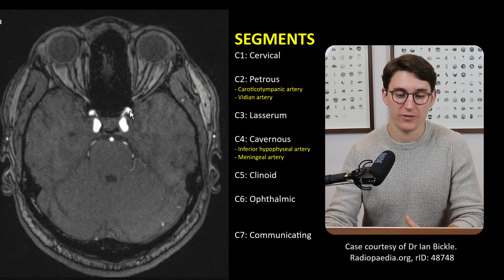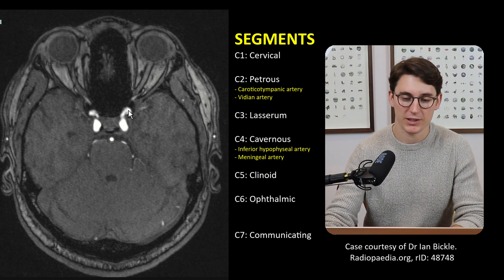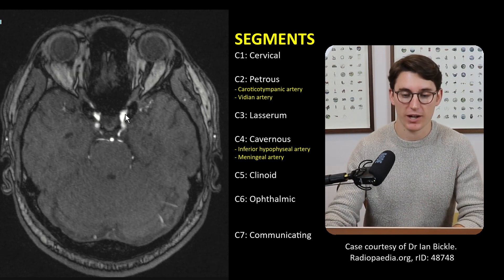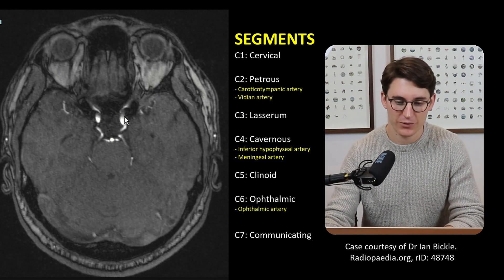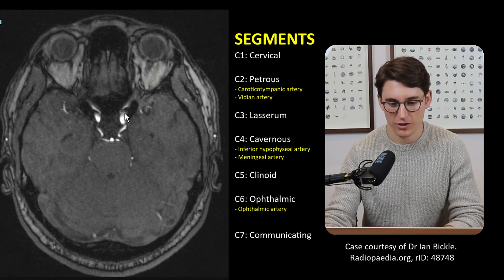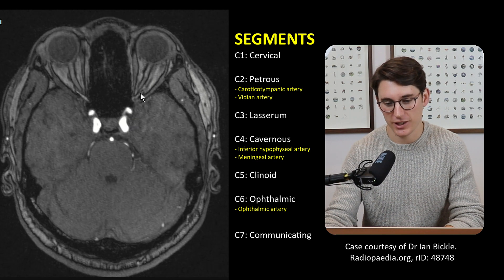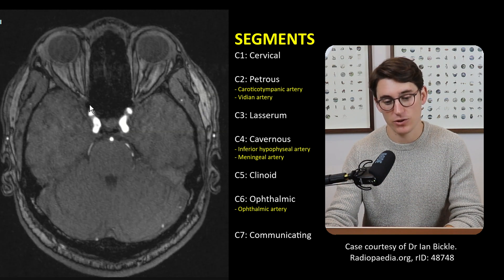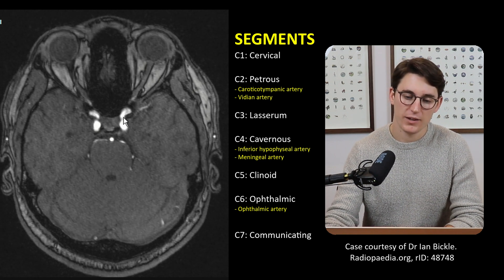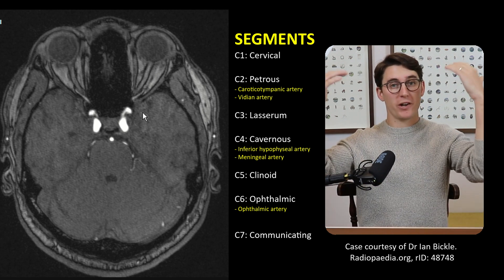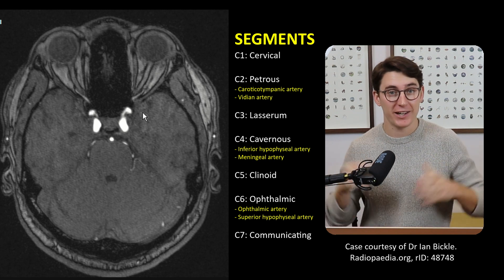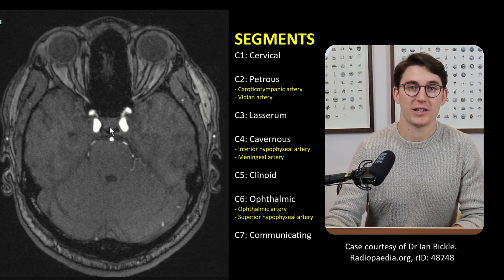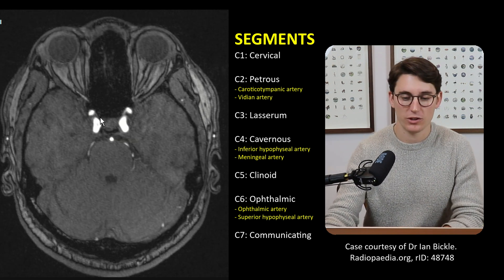Then again we loop our clinoid segment, C5 — there are no branches of the clinoid. And we come around into our ophthalmic segment, C6, which also has two branches. The first is the biggest branch off the ICA — the ophthalmic artery. On the patient's left-hand side we can see the ophthalmic artery coming off, and we can follow it through the optic canal heading into the orbit. The same on the other side — you can see that ophthalmic artery coming off the right, heading through the optic canal into the right orbit. The second branch off C6 — since we are now superior to the pituitary gland — is the superior hypophyseal artery, which supplies the anterior portion of our pituitary gland.